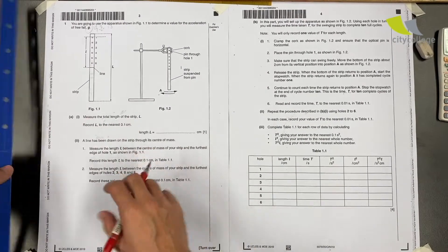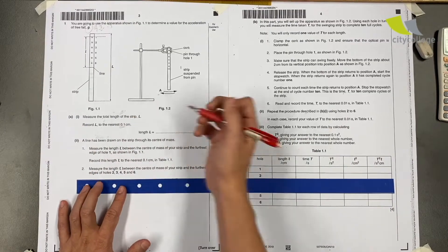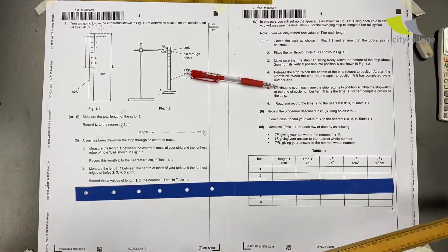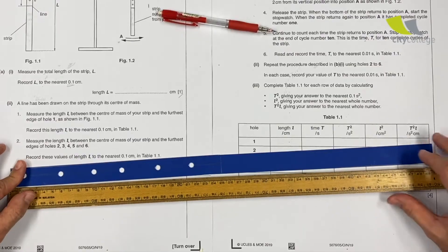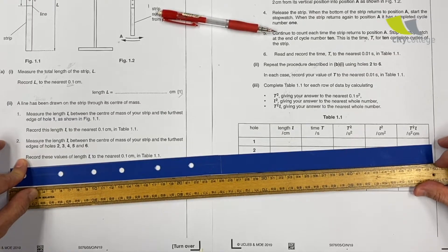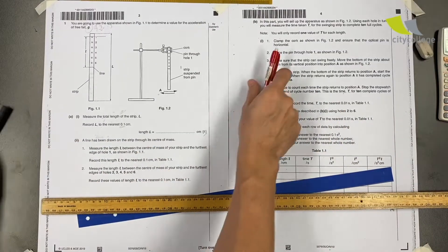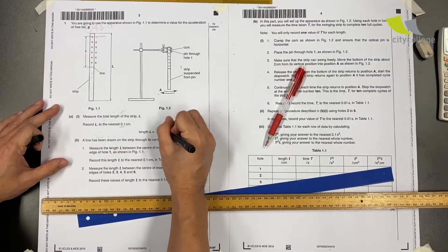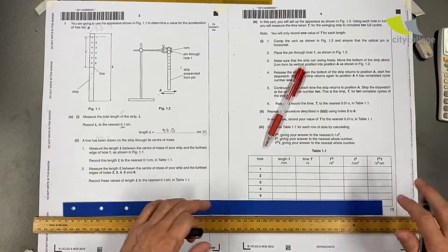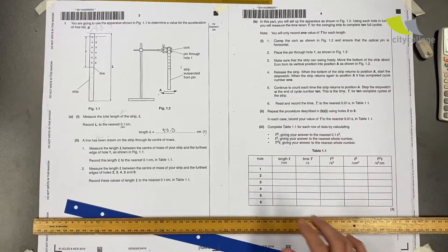Measure the total length of strip L. So this is my strip L. Record L to the nearest 0.1 cm. This will get me the first one mark, the easiest one mark. You should at least get one mark. Okay, it's 50.0 cm. So I just write down here 50.0. Remember, it's to 0.1, so even if it's 50, you give it 0.0, that will let you get the one mark.